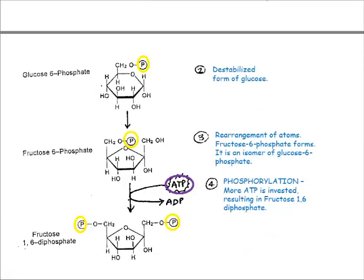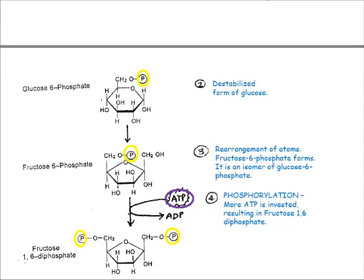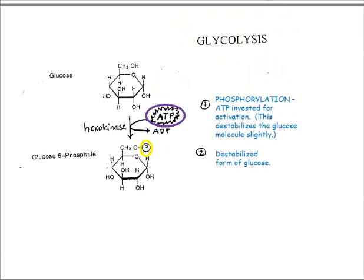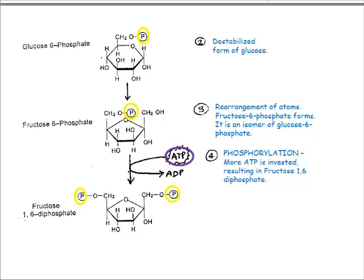The glucose 6-phosphate gets converted to fructose 6-phosphate by rearranging the atoms a little bit. It reverts to fructose 6-phosphate because this is a little more stable than glucose 6-phosphate. It's important to note that every one of these reactions requires a different enzyme — in the first phase, that enzyme is hexokinase. We don't need to memorize all enzyme names, but we should remember that every reaction requires a different enzyme.